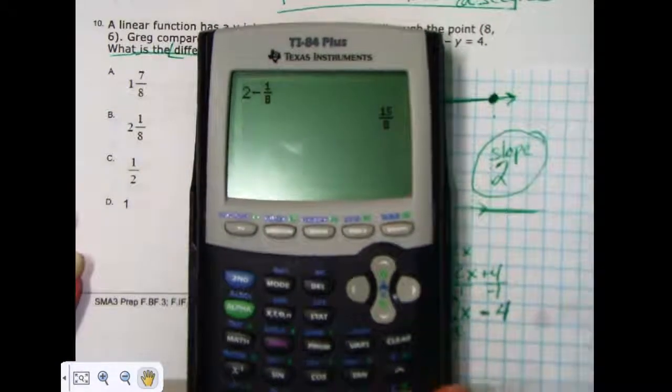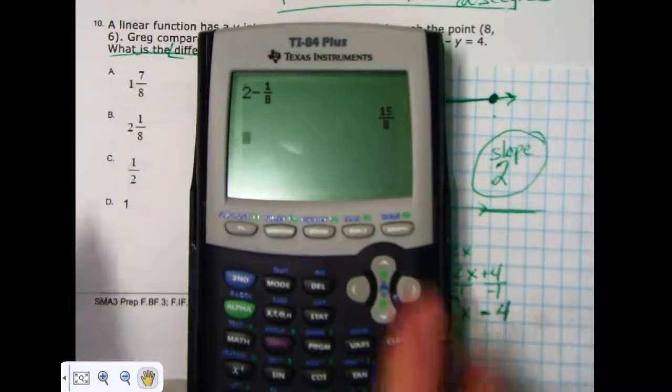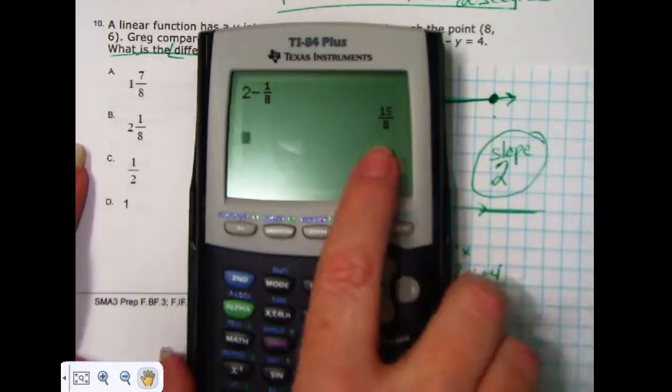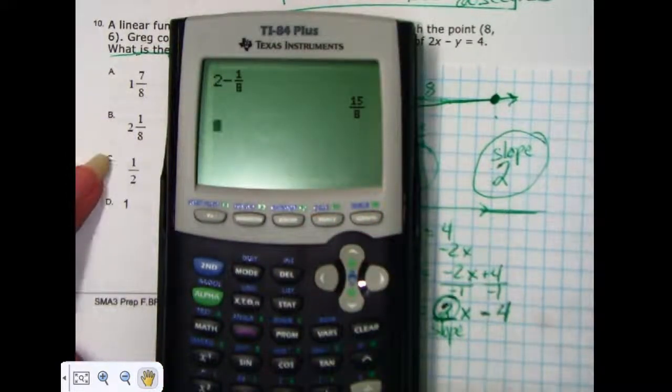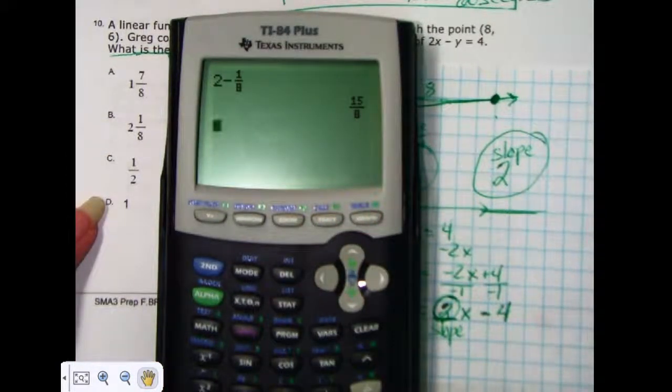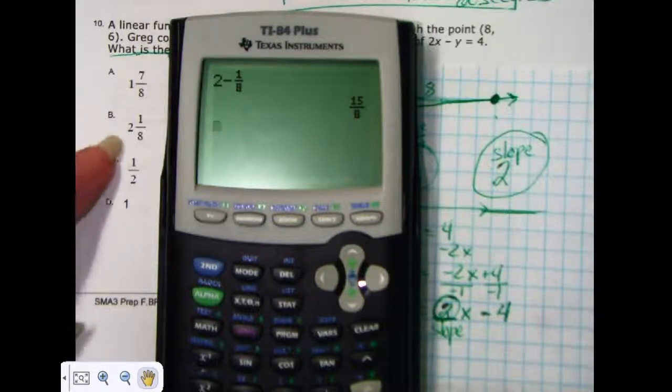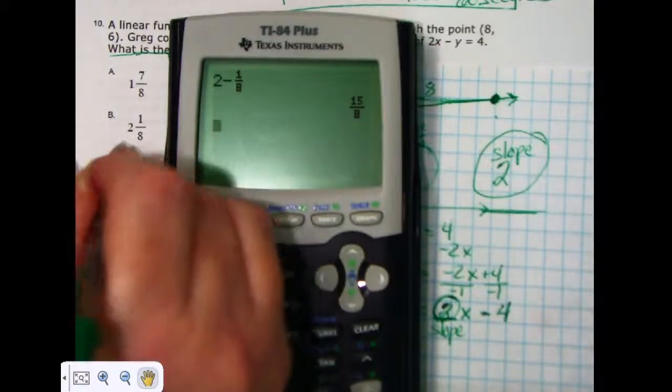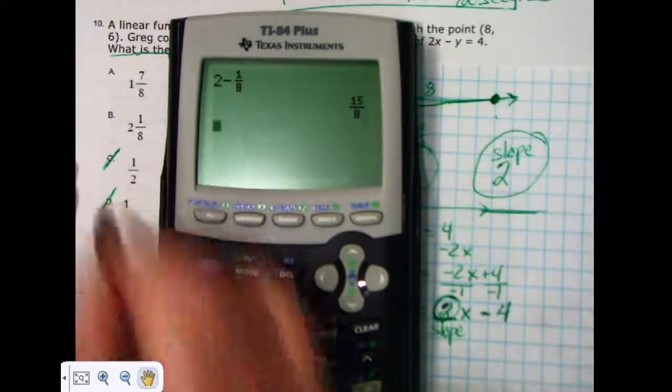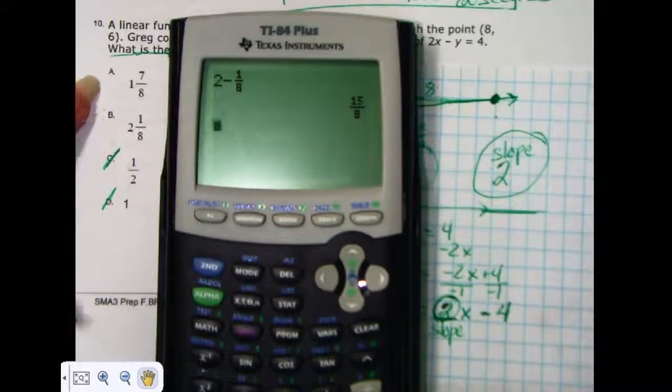All right, so we have 2 minus 1/8. That gives us an answer of 15 over 8, but it doesn't match any of my answer choices, but it does. It answers one of my answer, it matches one of my answer choices. It definitely isn't 1/2, and it definitely isn't 1, so it's one of these two.